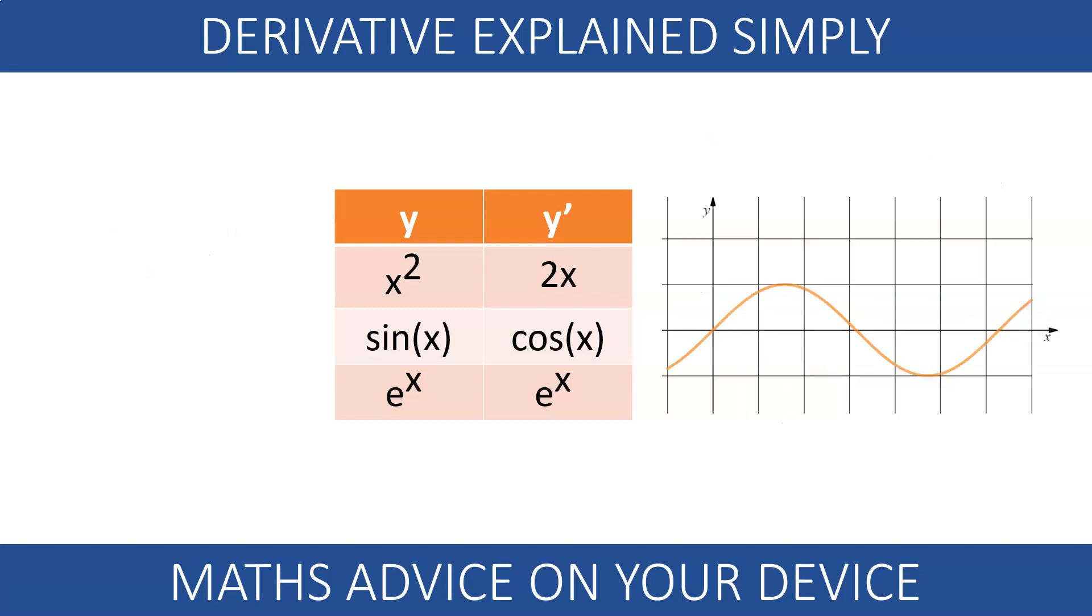As a second example, the derivative of sin x, cosine x, can be used to find the rate of change at, for example, x equals 1. Cosine of 1 radian is 0.54. The sine function is increasing at the rate of a half, approximately, the gradient of the tangent at x equals 1.